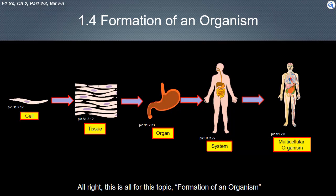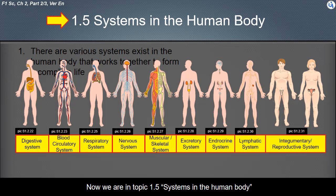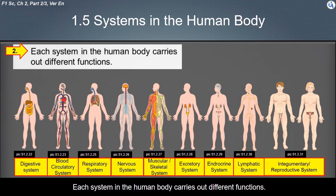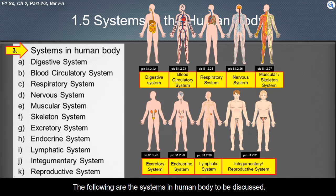This is all for this topic, formation of an organism. Now we are in topic 1.5, systems in the human body. There are various systems in the human body that work together to form a complete life. Each system in the human body carries out different functions. The following are the systems in the human body to be discussed.